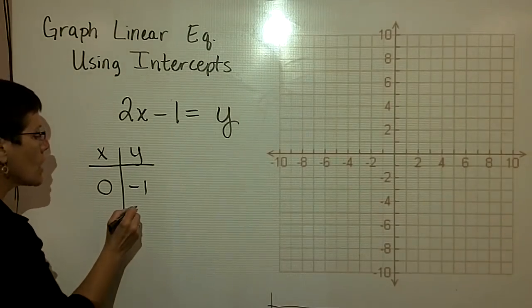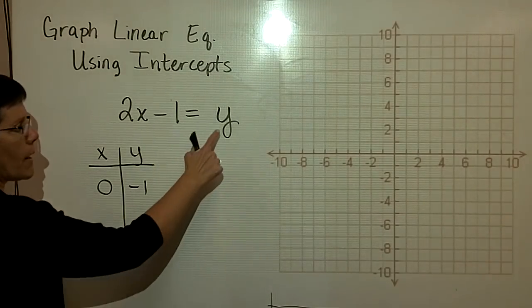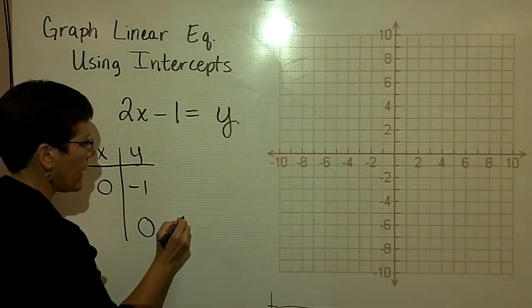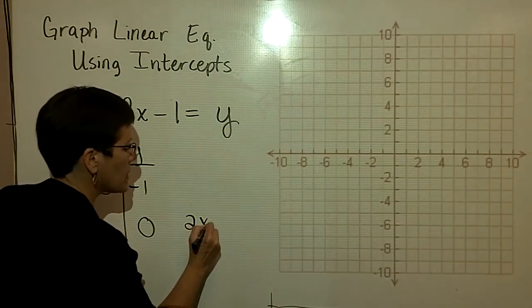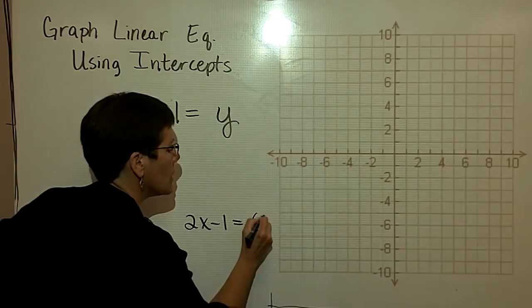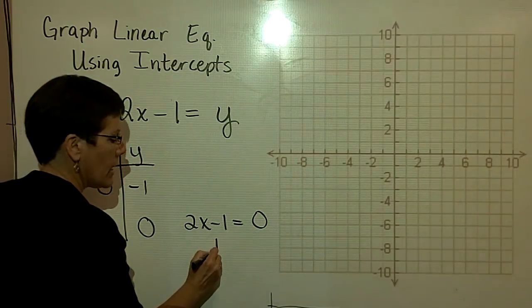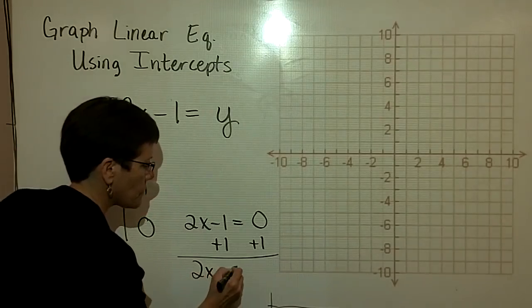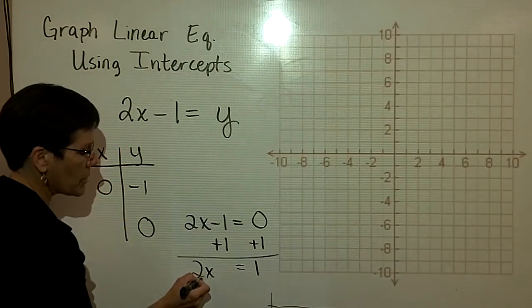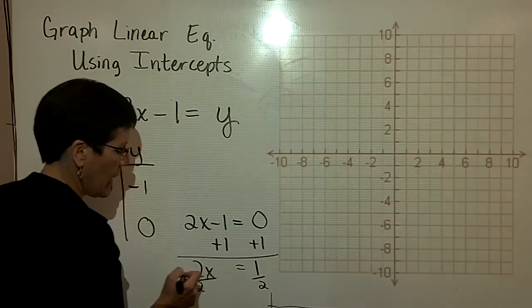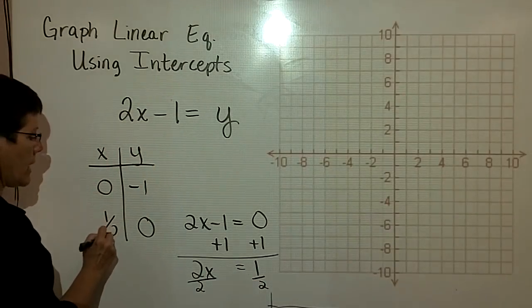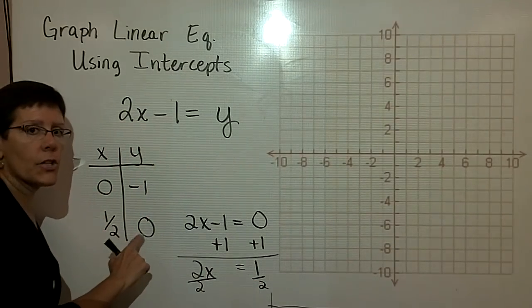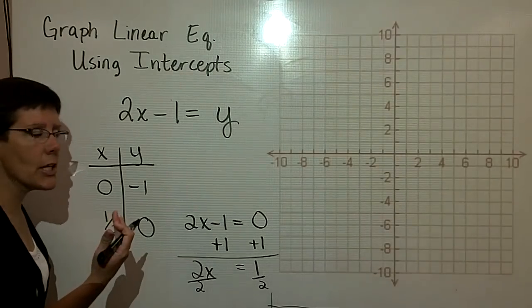But when y equals zero in this problem, when this is zero, what I have is on the left I have 2x minus 1 equals zero on the right. And I have to solve this equation by adding 1 to both sides and then dividing both sides by 2. I'm running out of space here. And I find out that x is equal to 1 half. That's a little bit harder to graph that ordered pair. And I don't particularly care for it.